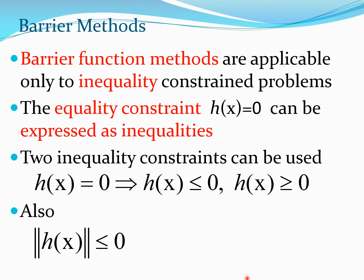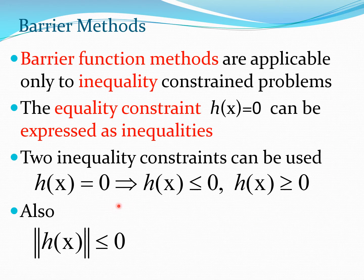There is a way of handling equality constraints if you have a computer program which just deals with g(x)-type constraints. If you have an equation h(x) = 0, you can write it as two inequalities: h(x) ≤ 0 and h(x) ≥ 0. If both are satisfied at the optimal point, then h(x) = 0 is satisfied. Another way is to take the norm of h(x) and set that to be less than 0, though this can convert a linear function into a nonlinear one. These are somewhat cumbersome ways, but it is possible to convert such constraints into g(x) constraints.